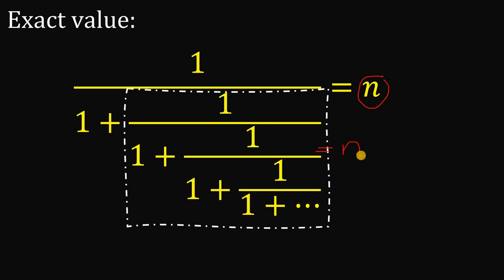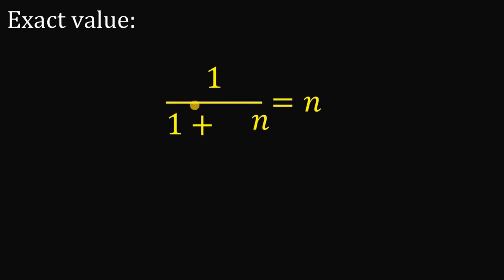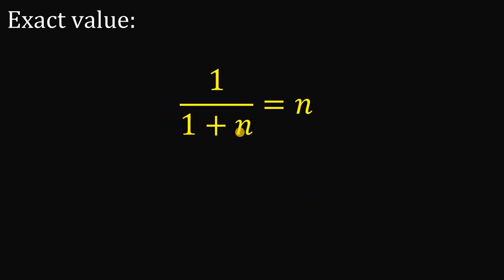So we can replace this as n. Therefore, we can say that 1 over 1 plus n must be equal to just n. Our goal is now to solve for the value of n.